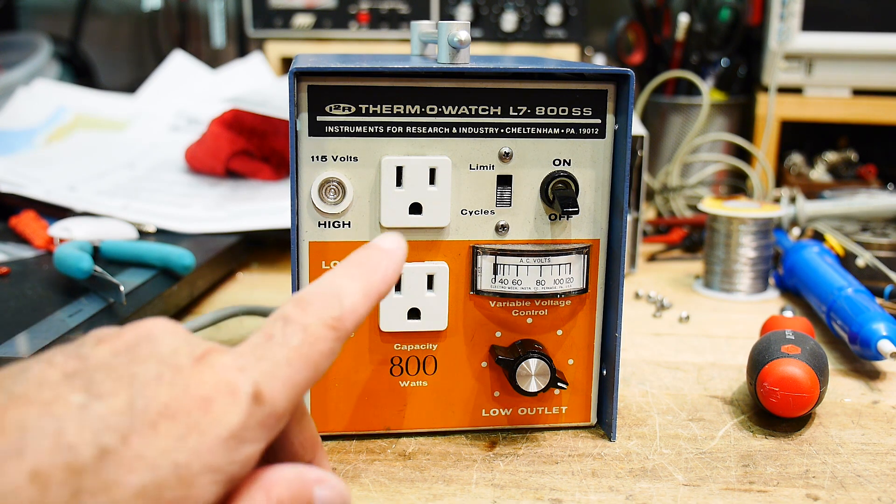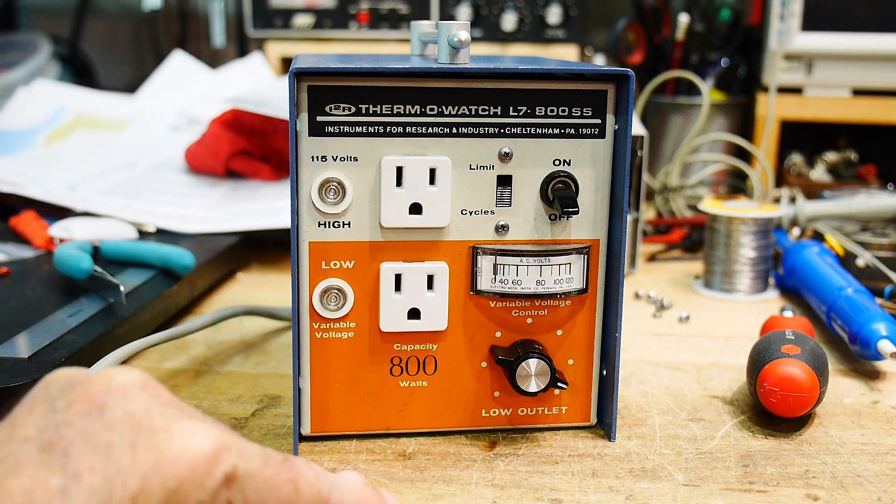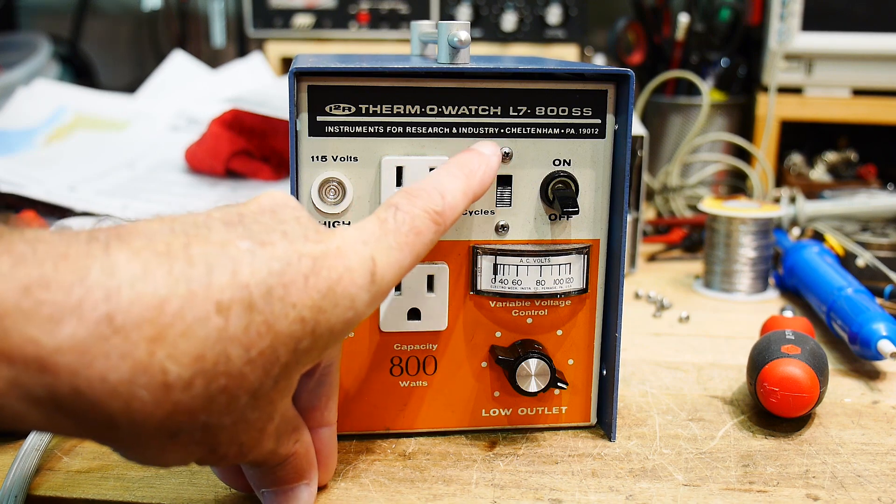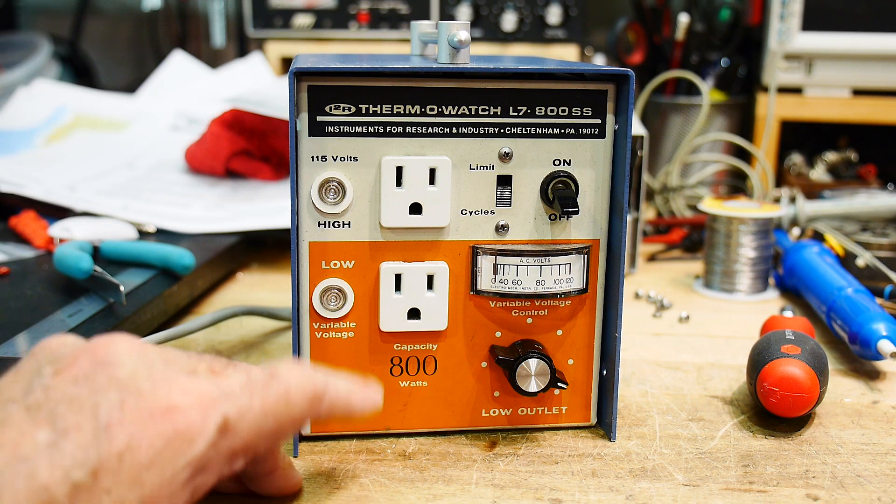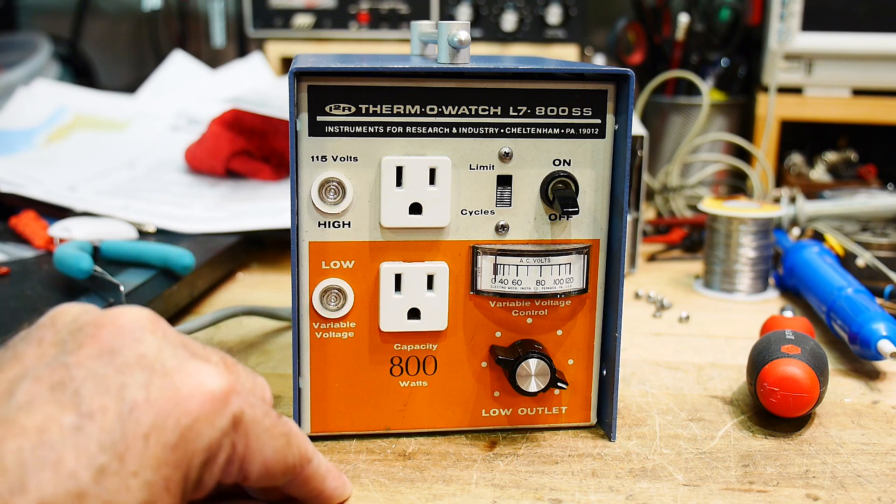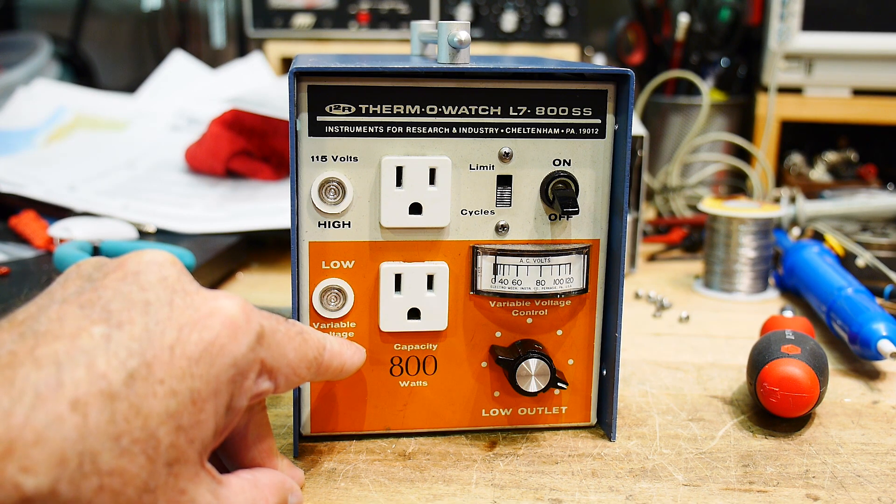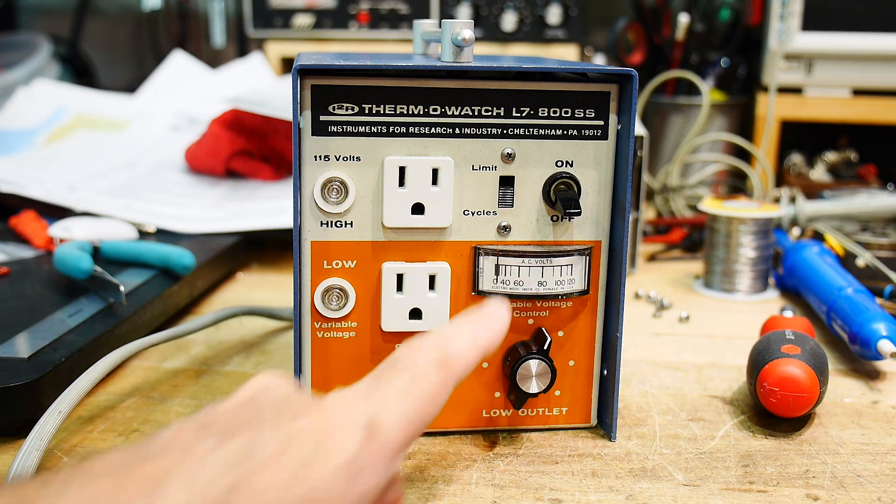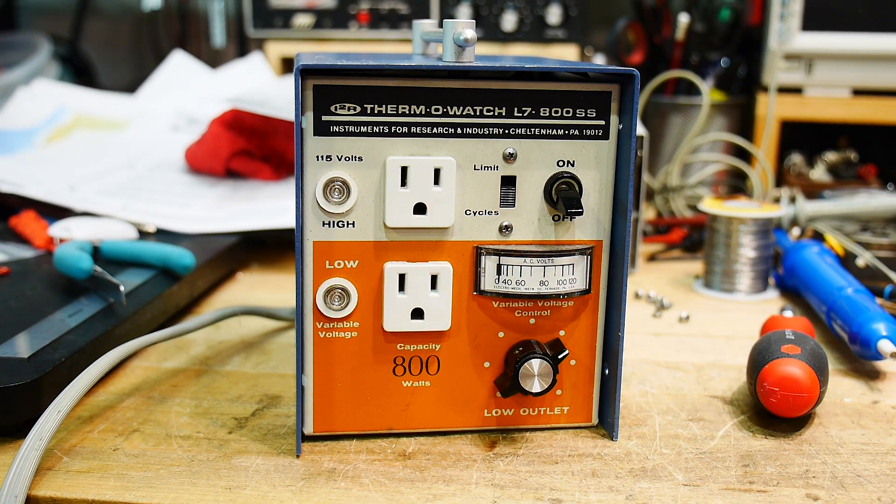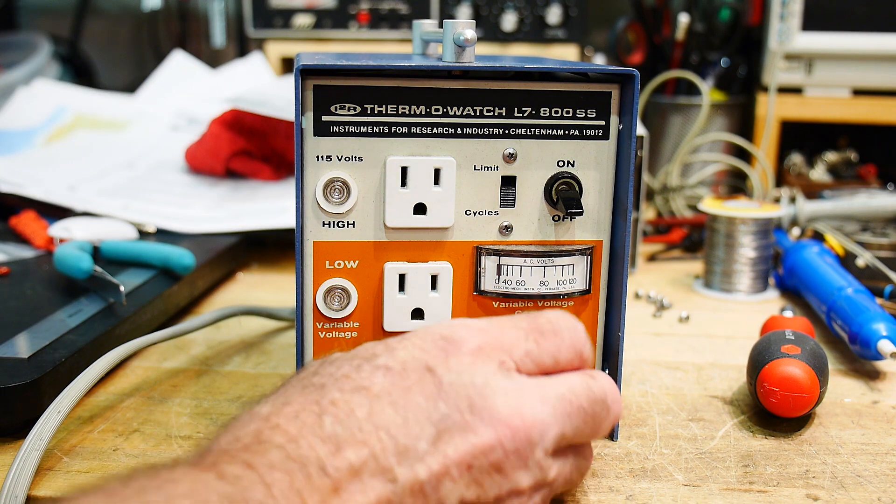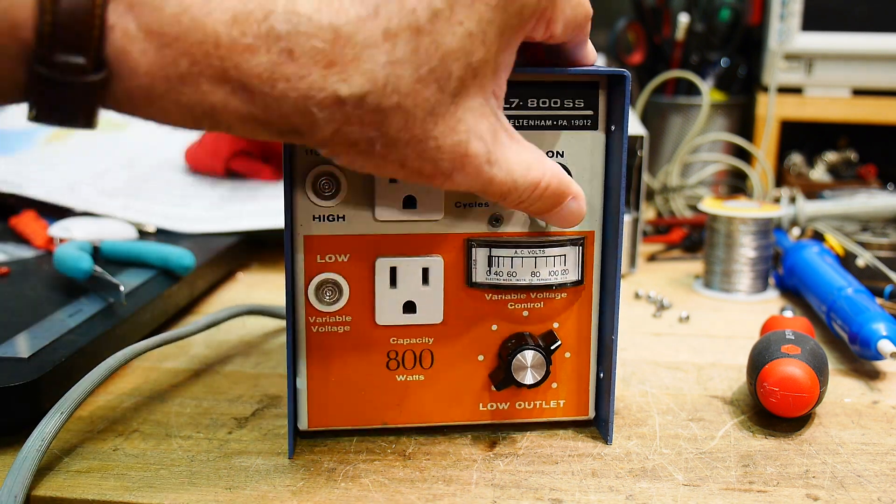And I didn't really know what it was. It's a Thermowatch, I-squared-R company. It's an L7-800SS, Instruments for Research and Industry, Pennsylvania made in the USA. And it looks like there's two power sockets. This one says 115 volts and this one says variable voltage. And this little knob over here and a voltmeter. So sounds like you can plug into it here and you can vary the voltage. So since it's thermal, maybe it's for some kind of heating thing and you can set the temperature by how much power comes out, how much voltage comes out of the AC. Big on-off switch.